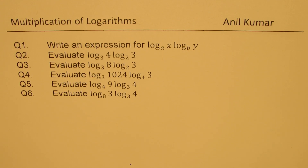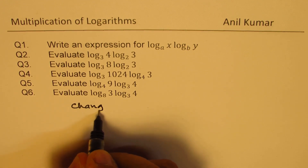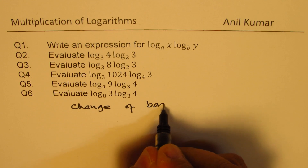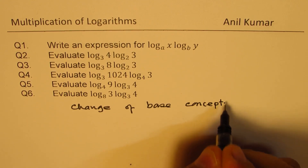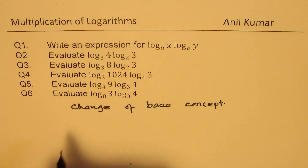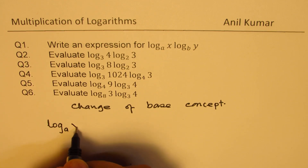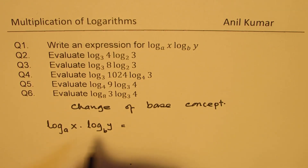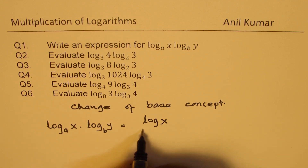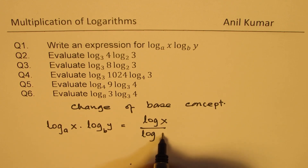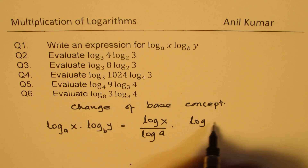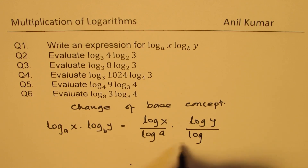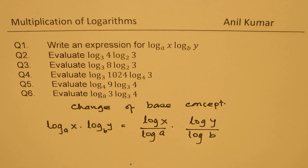Let us see how to multiply logarithms when they have different bases. We use the change of base formula to get the result. For the general expression log to the base a of x times log to the base b of y, we change the base to 10. We write this as log base 10 of x over log base 10 of a, times log base 10 of y over log base 10 of b. This expression can always be applied to evaluate all these terms.